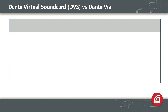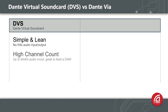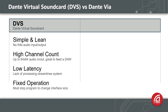Dante Virtual Soundcard was our first virtual Dante interface on the computer. It is simple and lean. It can be used at the operating system level, playing out any system sound. But that means your system alerts could be mixed in with your production audio if you aren't careful. Dante Virtual Soundcard is the right tool if you want a high channel count and low latency to a single application like a digital audio workstation. You can reconfigure its size, which is a good idea to save resources on the computer.